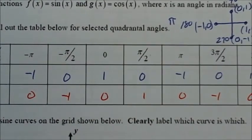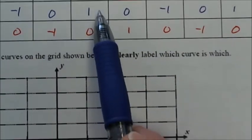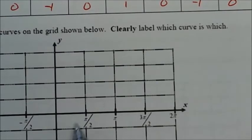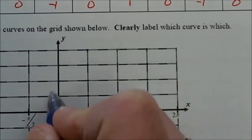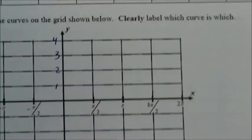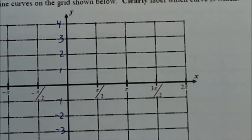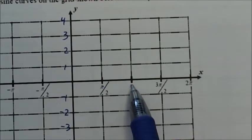Now we're going to graph these — plot these points on the grid provided. Graphing cosine first: the x-axis scale is in radians, with tick marks at π/2, π, 3π/2, and 2π. The y-scale is simply the numbers 1 through 4. The x-axis is broken up in intervals of π/2, or 90 degrees.